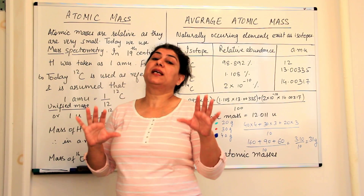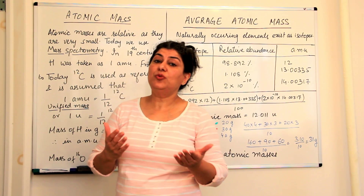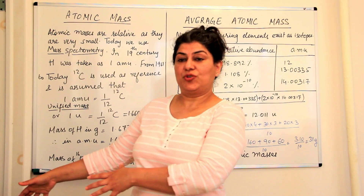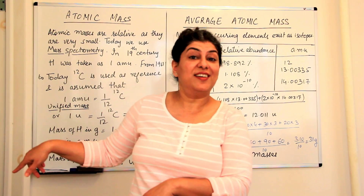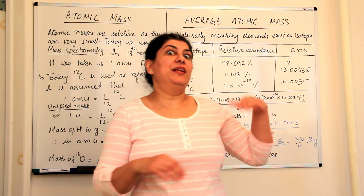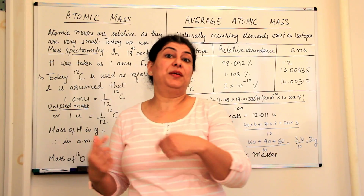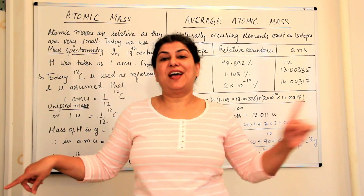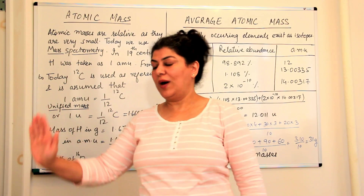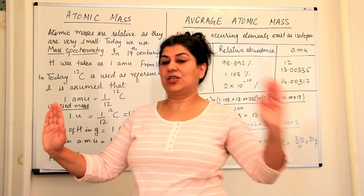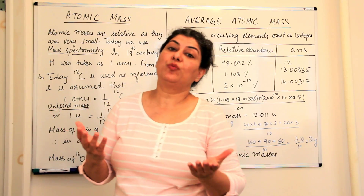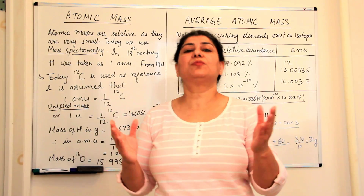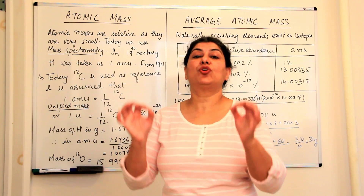At that time there were no proper techniques of measuring the masses, so they measured mass relative to another mass. For example, if I'm standing with a friend and I'm heavier, and there's a third friend who's even heavier than me — when you have one fixed reference and you start comparing all others to that, that is what the chemists did. They took the hydrogen atom and assumed that one atom of hydrogen would be assigned the mass of one atomic mass unit.